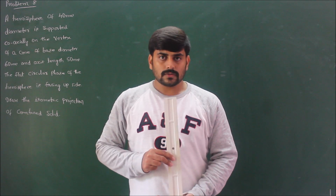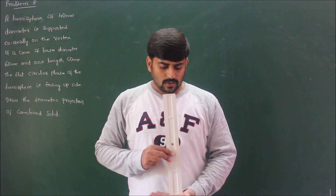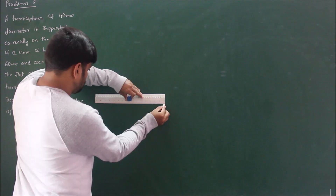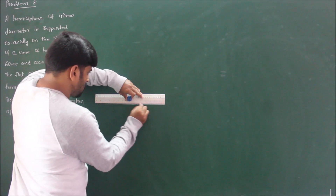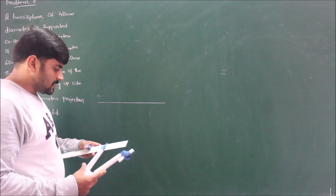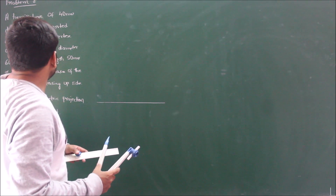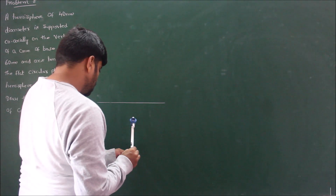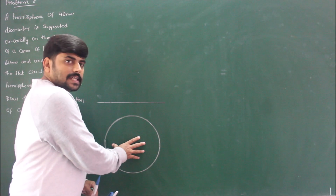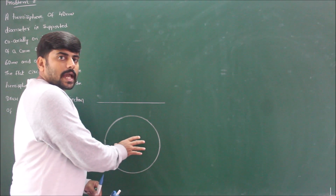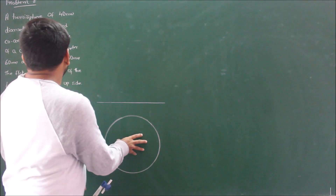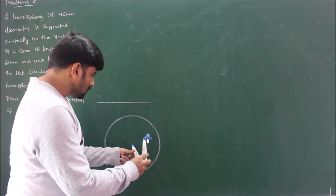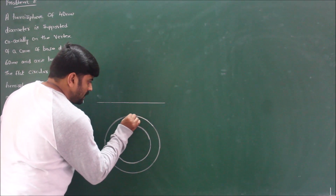In the top view, I can see the hemisphere as a circle and the base of the cone as a circle. Drawing the base first — the cone has diameter 60 mm, so take radius 30 mm and construct a circle. This represents the top view of the cone. Looking at the hemisphere from the top, I see one more circle of diameter 40 mm, so taking radius 20 mm with the same center, construct one more circle. Now darken the top view of the combined solid.